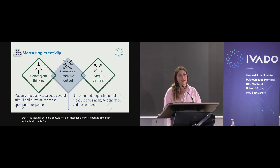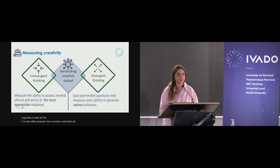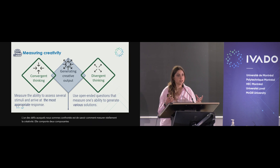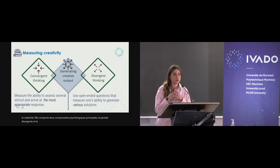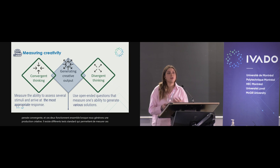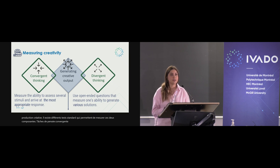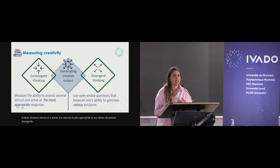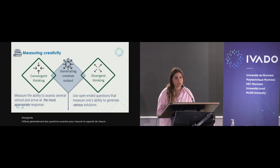One of the challenges that we face is how can we actually measure creativity? It has two main psychological components: divergent thinking and convergent thinking, and these two work together when we generate a creative output. There are various different standard tests that can measure these two components. Convergent thinking tasks measure one's ability to assess several stimuli and arrive at the most appropriate response, and divergent thinking tasks use usually open-ended questions to measure one's ability to generate various solutions to a problem.